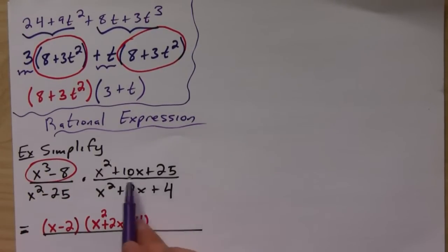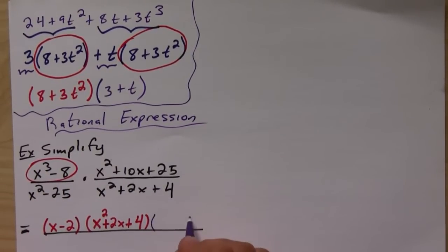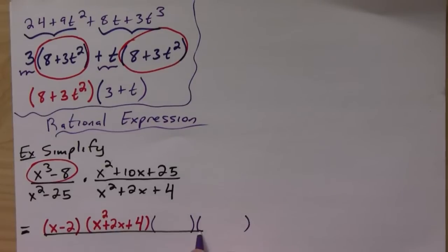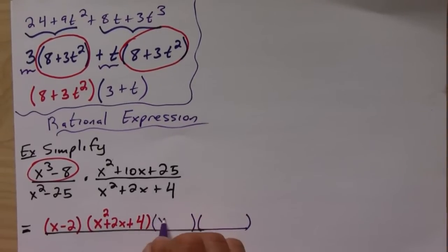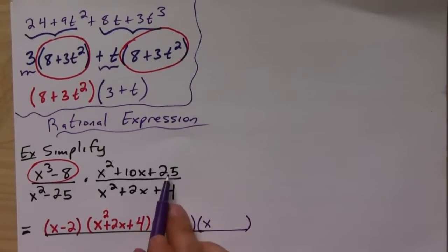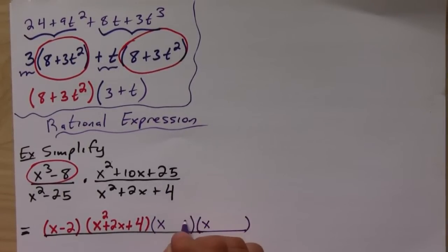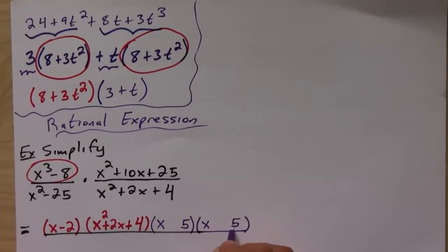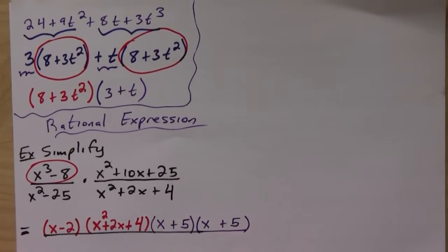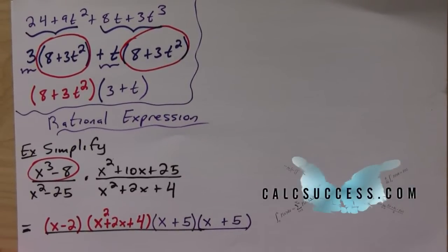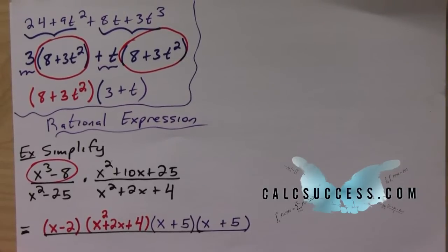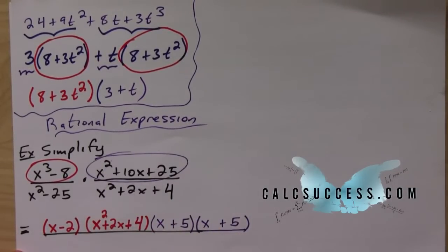All right, and then this one we'll do by trial and error, but this one's actually quite easy to figure out. We know we need an x and an x, and two numbers that multiply to give you 25. There aren't many options and it looks like 5 and 5 will work.